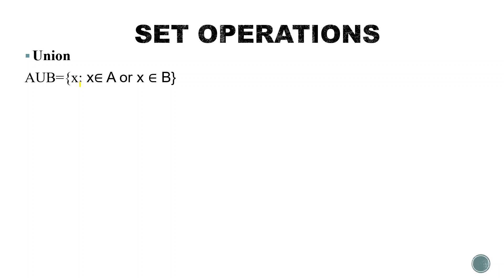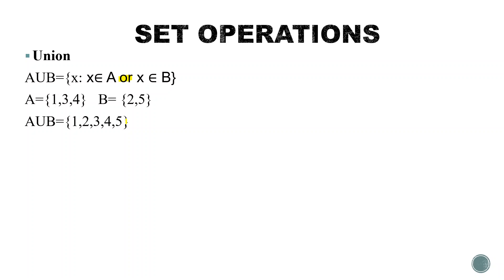A union B is defined as the set of all x such that x is an element of A or x is an element of B. For example, let set A equal {1, 3, 4} and set B equal {2, 5}. Then A union B is the combination of all elements from A and B.